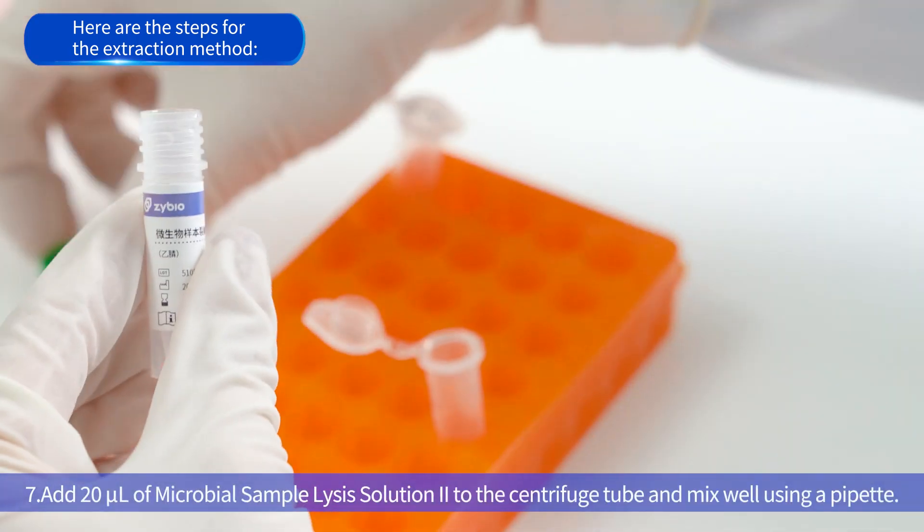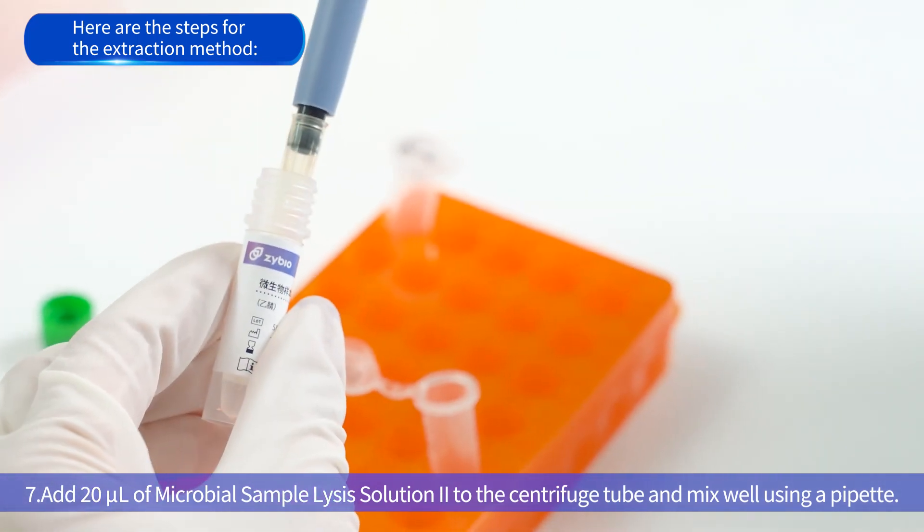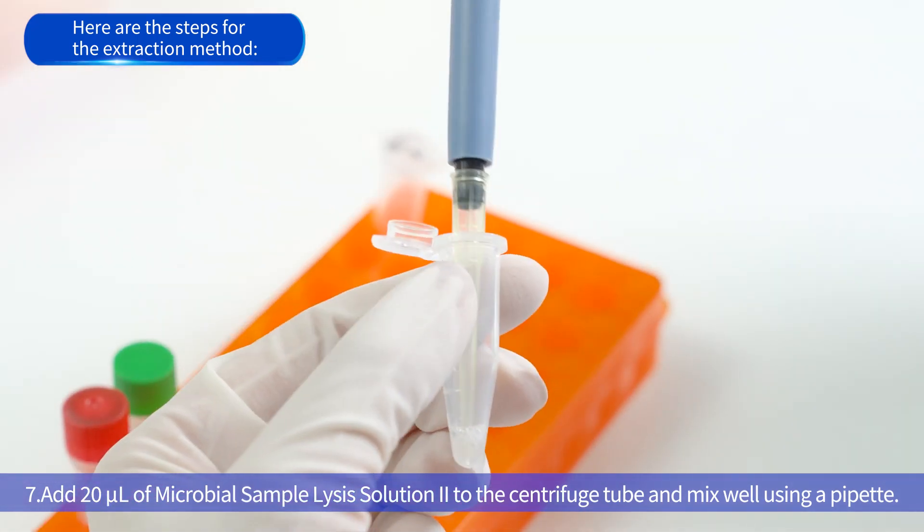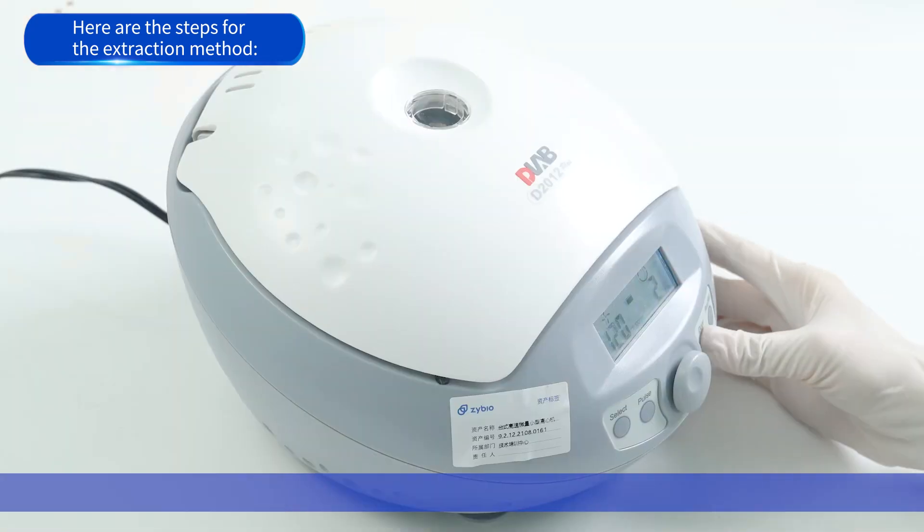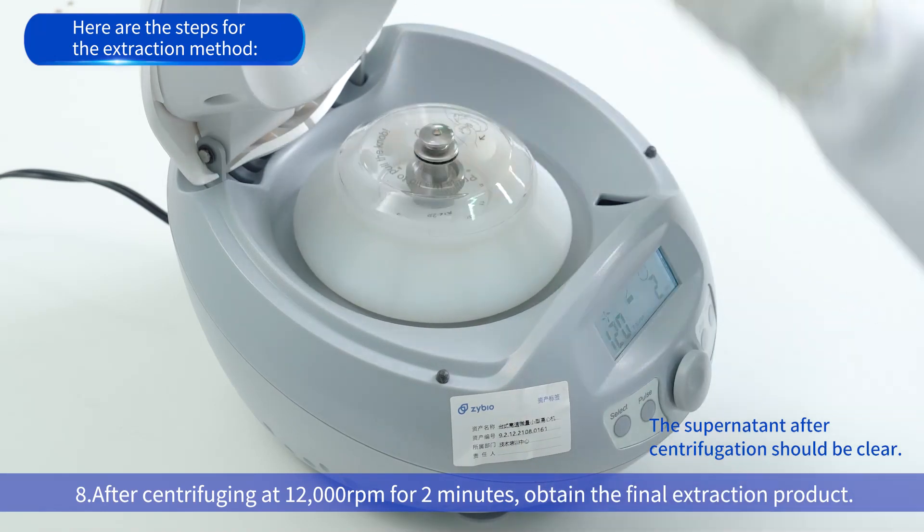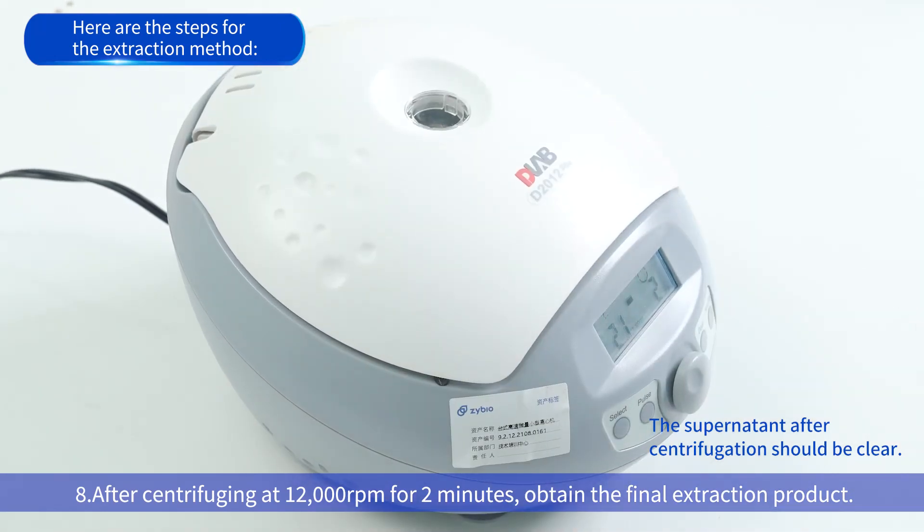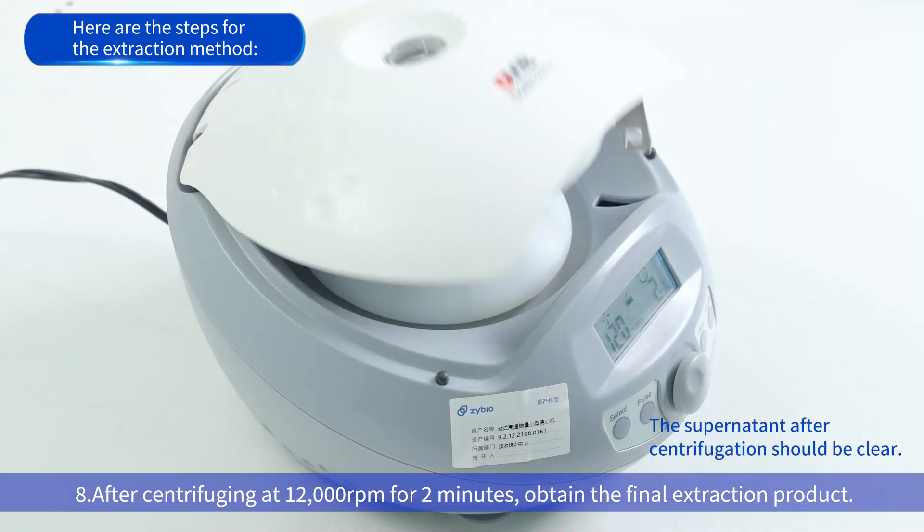Seventh, add 20 microliters of microbial sample lysis solution 2 to the centrifuge tube and mix well using a pipette. Eighth, after centrifuging at 12,000 rpm for 2 minutes, obtain the final extraction product. The supernatant after centrifugation should be clear.